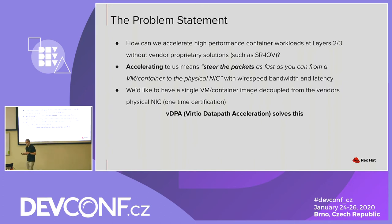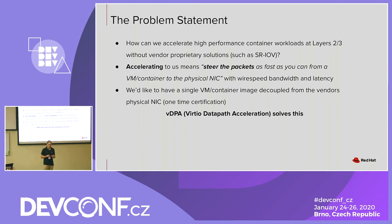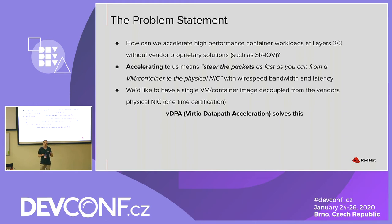The problem we're trying to solve is about network acceleration for VMs and containers. In today's use cases — both telco and enterprise — we're seeing more and more situations where you want to take a VM or container and give it a fast networking interface: warp-speed throughput, line-rate capacity, and low latency. The way to do that today is typically with SR-IOV. We split the discussion into packet processing and packet steering.